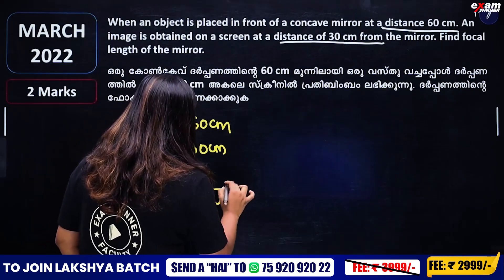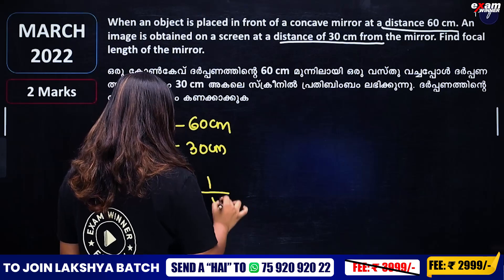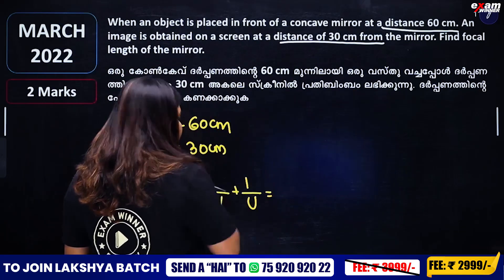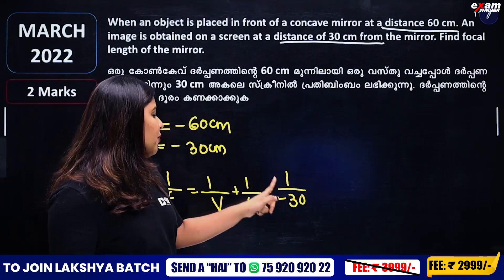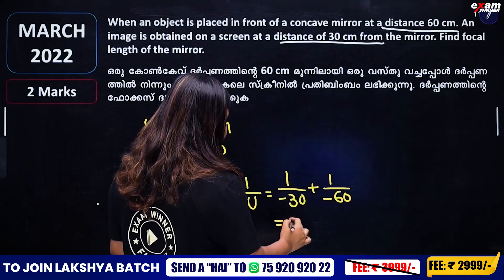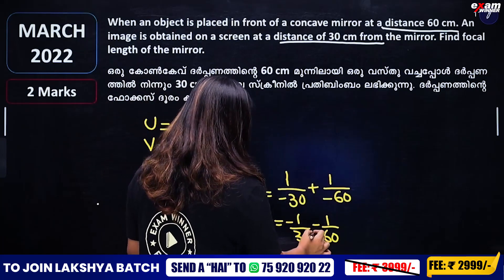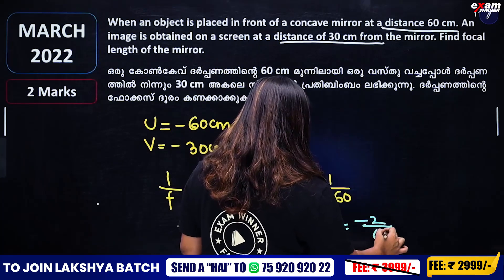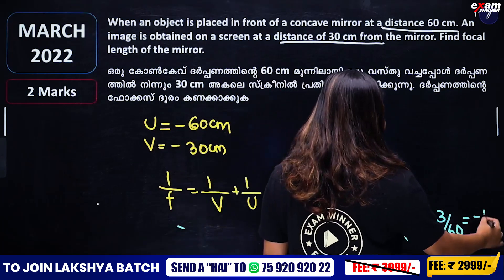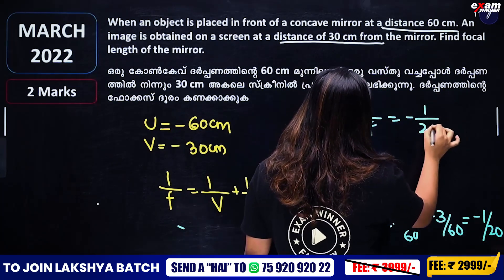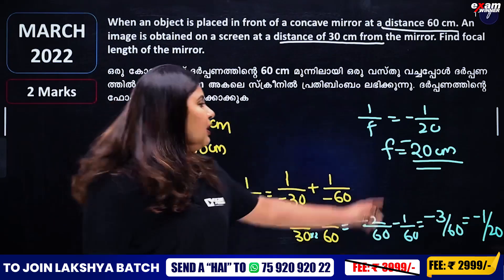1 by f equals 1 by v plus 1 by u. So 1 by minus 30 plus 1 by minus 60 equals minus 1 by 30 minus 1 by 60. That is minus 2 by 60 minus 1 by 60, then minus 3 by 60, which simplifies to minus 1 by 20. So 1 by f equals minus 1 by 20, meaning f is equal to minus 20 cm. Focal length is minus 20 cm.